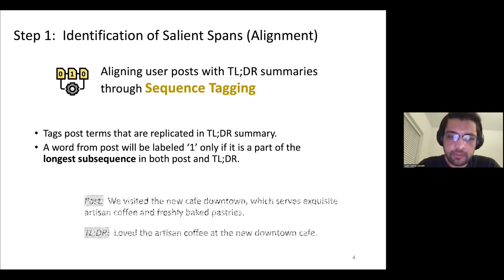As an example, you see the post and TLDR here and two phrases that are labeled as positive and the rest of the terms or phrases within the post are labeled negative or zero.